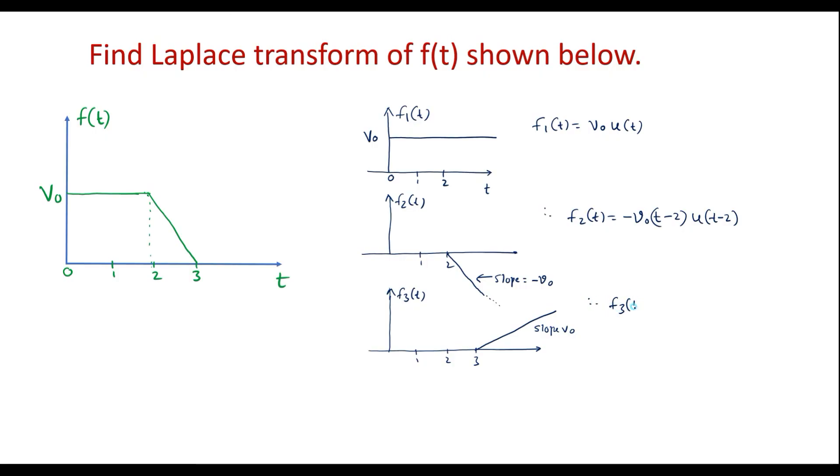So therefore, I can represent f3 of t is equal to plus v0 t minus 3 u of t minus 3.